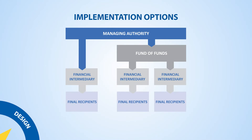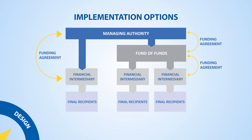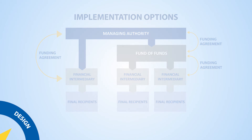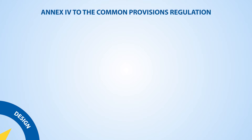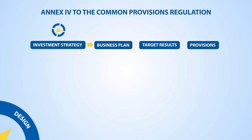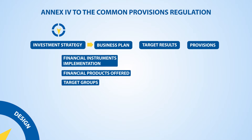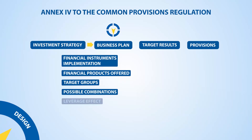In the next step, funding agreements will need to be drafted. They can be concluded: one, between the managing authority and the body implementing the fund of funds, and subsequently between the body implementing the fund of funds and the financial intermediaries; or two, between the managing authority and the financial intermediaries if there is no fund of funds involved. The funding agreements must include all elements provided in Annex IV to the Common Provisions Regulation — for example, an investment strategy which details how the financial instrument should be implemented, the financial products offered, the target groups, and possible combination with grants, as well as a business plan which explains the expected leverage effect.